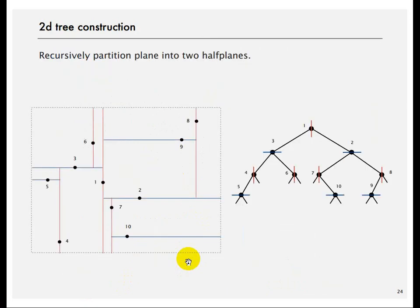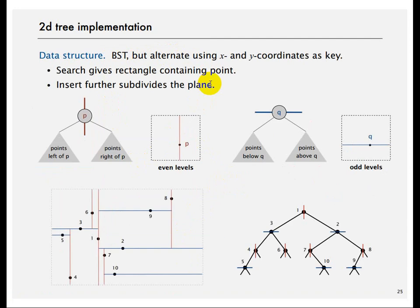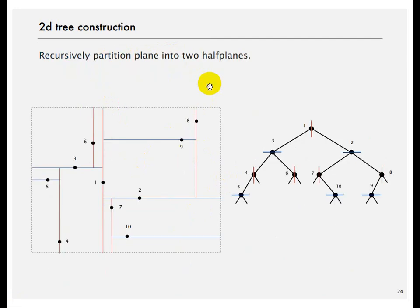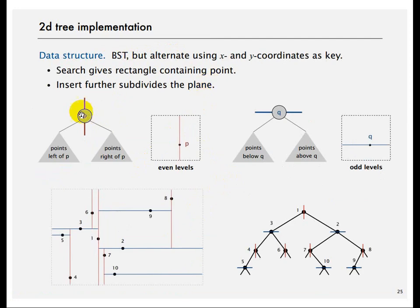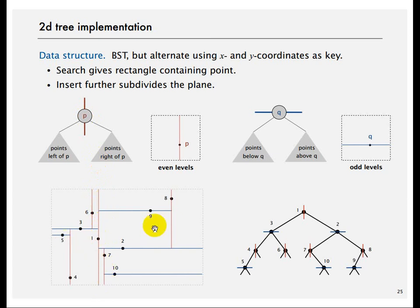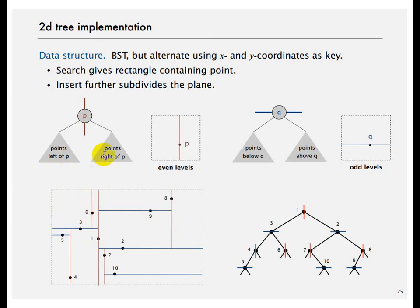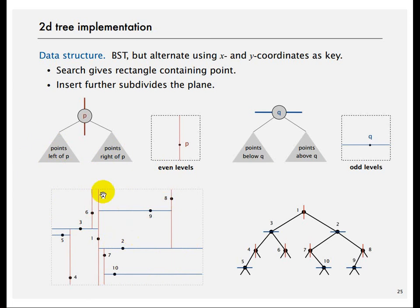Instead of a grid, we use a 2D tree. The idea is to recursively partition the plane into two half-planes. Given a point p, you draw an imaginary vertical line through it, dividing the plane into two halves. Points to the left of p go into the left subtree and points to the right go into the right subtree. You then recursively alternate between vertical and horizontal partitions.